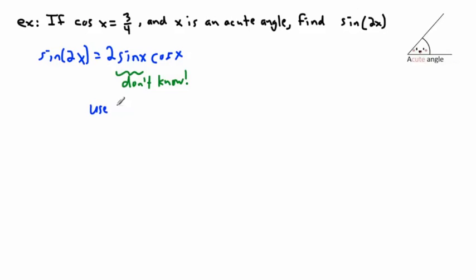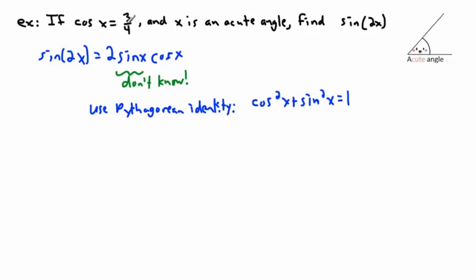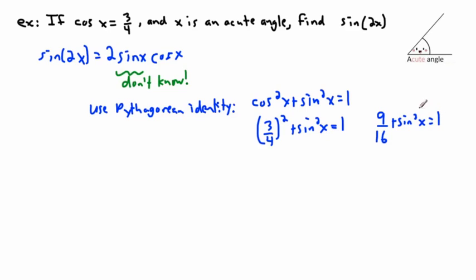We can use the Pythagorean identity because we know cosine and we want to find sine. The identity says cosine squared x plus sine squared x equals one. Since cosine is three over four, we get three over four quantity squared plus sine squared x equals one. Squaring gives us nine over sixteen plus sine squared x equals one, so sine squared x equals sixteen over sixteen minus nine over sixteen, which is seven over sixteen.